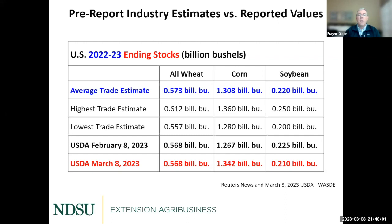For corn, they were expecting a slight increase in ending stocks, and a lot of that expectation was around a change in export numbers. But we got a slightly larger decrease in exports than first expected. When you compare USDA's forecast last month versus the current forecast, there's about a 75 million bushel cut in exports. That has been a challenge. When we look at our export pace today relative to this time last year, we're pretty well behind. We might see a little more export pace as we get towards the end of this marketing year, but we'll have to wait and see.